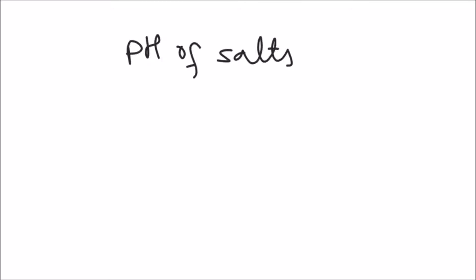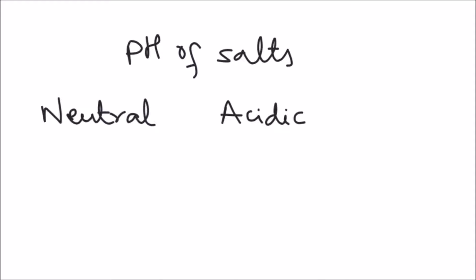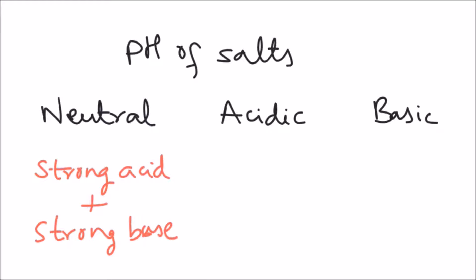What can be the pH range of different salts? The pH of salts can be neutral, acidic, or basic. A neutral salt is formed when a strong acid reacts with a strong base — both the acid and base neutralize each other to give a neutral salt.